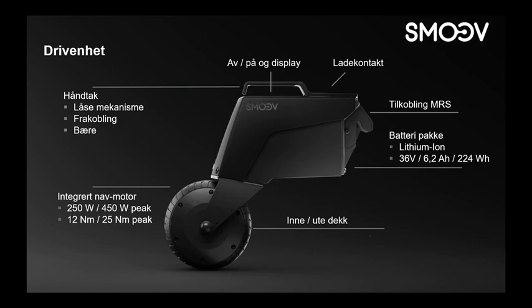On top of the unit is a small display that indicates battery status, which we saw earlier in the video, and the charging port. Then you have the handle on top, which is also a mechanism combined with attachment and release. The power handle on top is also meant to be able to drive with. With the power handle on top, you can attach and release the SMOOV with one hand, if you have the opportunity to do so.